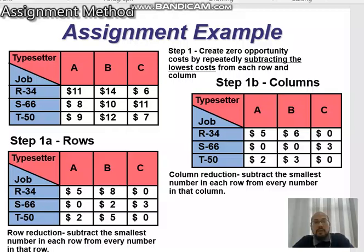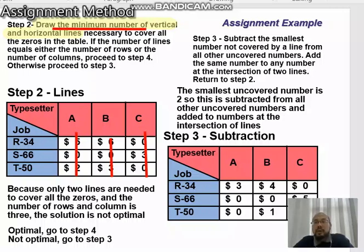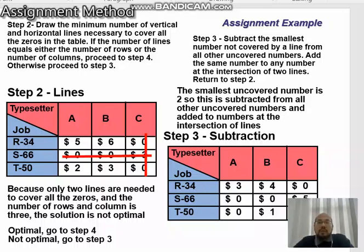We move to step two: draw the minimum number of vertical and horizontal lines necessary to cover all zeros in the table. We can cover all zeros with only two lines. Because only two lines are needed to cover all zeros, and the number of rows and columns is three, the solution is not optimal. Since it is not optimal, we go to step three.